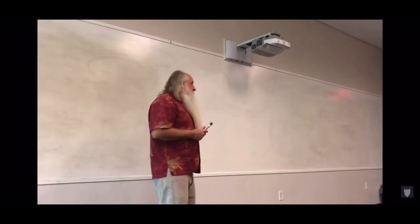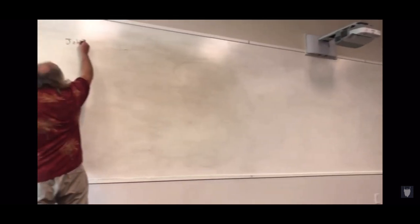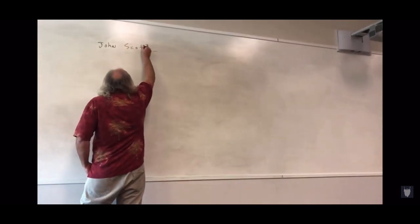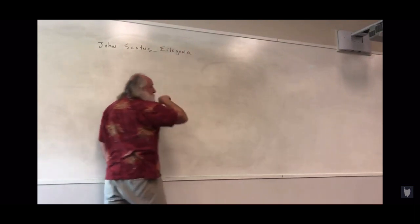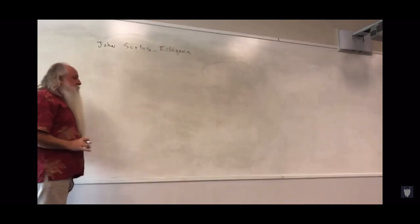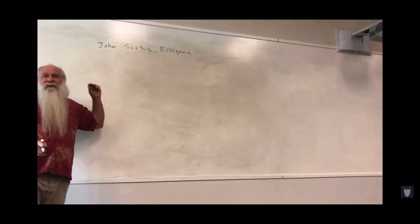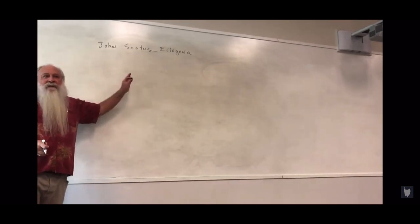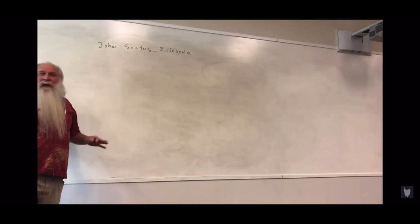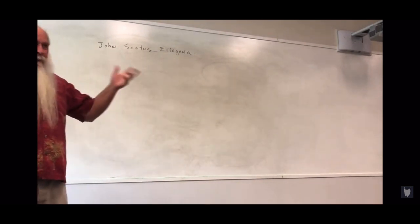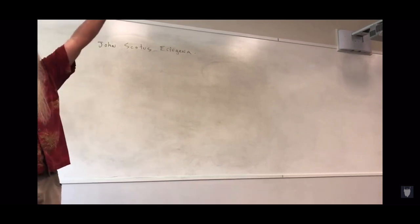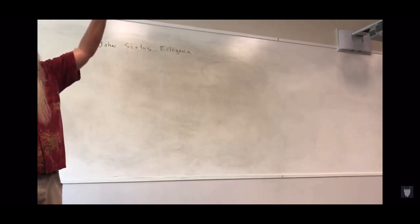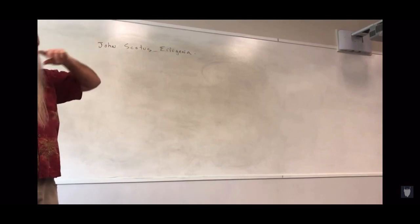The next guy I want to talk about, his name is John Scotus Erigena. And John Scotus Erigena, his name actually means John the Scotsman's Scotsman, or the Irishman's Irishman. But back then at the time, Ireland was Scotland. It was the land of the Scoti, and they went and invaded Pictland, which is to the north of modern-day England, which later becomes known as Scotland.